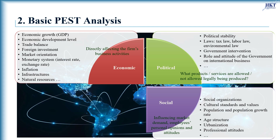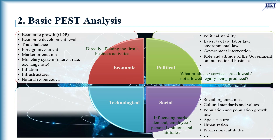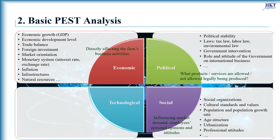The last component in the PEST analysis is the technological environment. New technologies reduce costs, improve quality, and lead to further innovations. Technologies and technical innovations can also generate new products and new processes. Online shopping, coding, and automation improve the business environment by making benefits for firms and consumers.